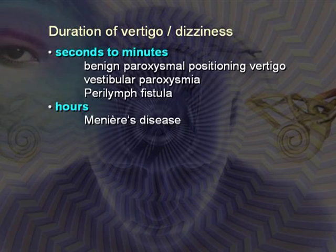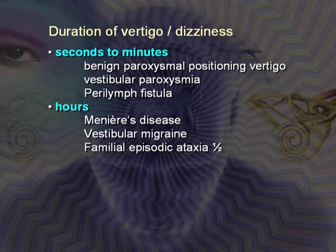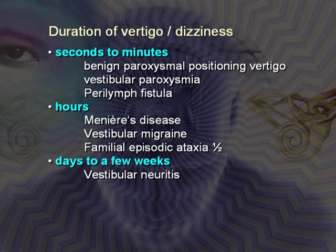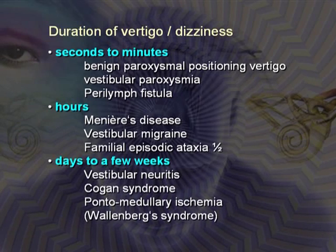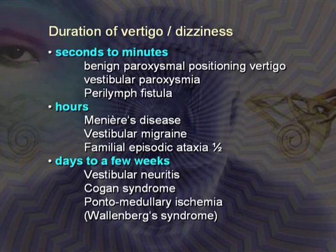Meniere's attacks usually last hours — they do not last minutes, though they can manifest with vestibular drop attacks. Vestibular migraine usually lasts minutes to hours. Familial episodic ataxia type 2 also lasts hours. Vestibular neuritis always lasts days — there is no vestibular neuritis lasting three hours; you need days for it to resolve. There is no rotational vertigo lasting months or weeks; if so, it's psychogenic.